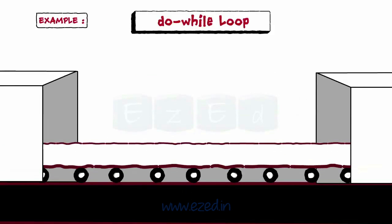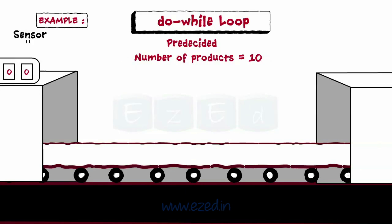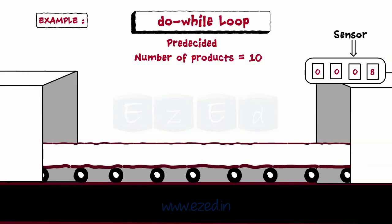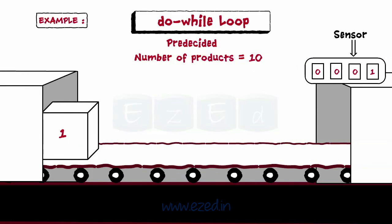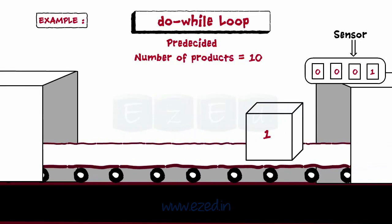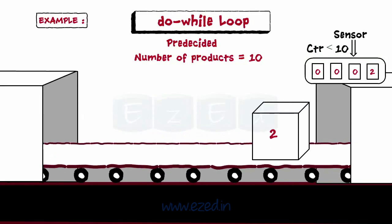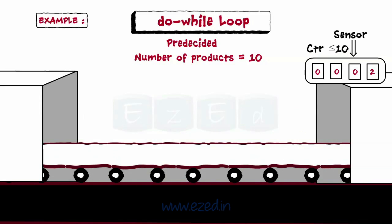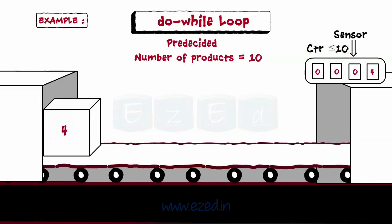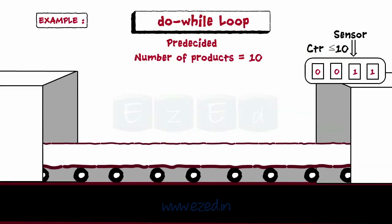Let's take the same conveyor example to understand do-while loop. As it is pre-decided that the number of products to be packed is 10, the sensor keeps a track on the counter's value whether it has reached 10 or not, and it is placed at the exit of the conveyor. As the first product is placed on the conveyor, the counter is set to 1, and the product is allowed to move on the conveyor for packaging. When the product is packed, the counter is incremented. Then the sensor tests the condition by checking if counter value is less than 10. As counter value is 2, the next product is allowed to be placed on the conveyor. This process continues till the counter reaches 10. The sensor won't allow the 11th product to move on the conveyor as the condition has become false.